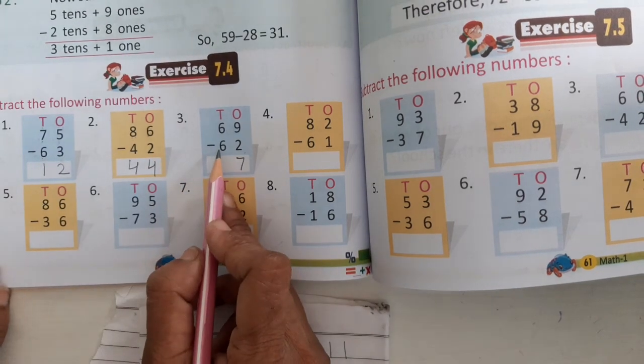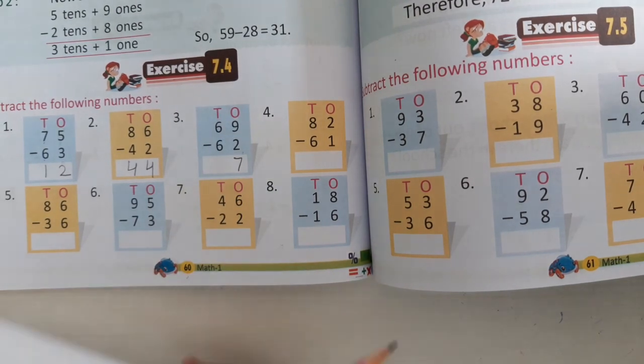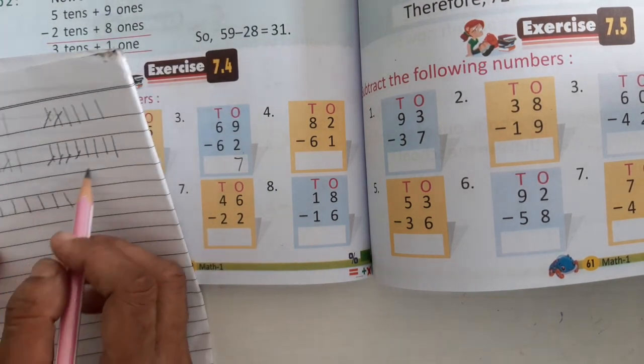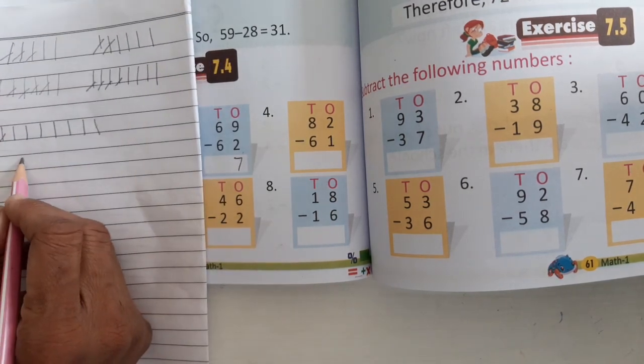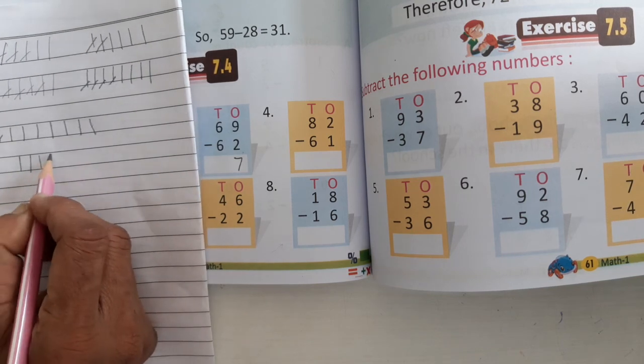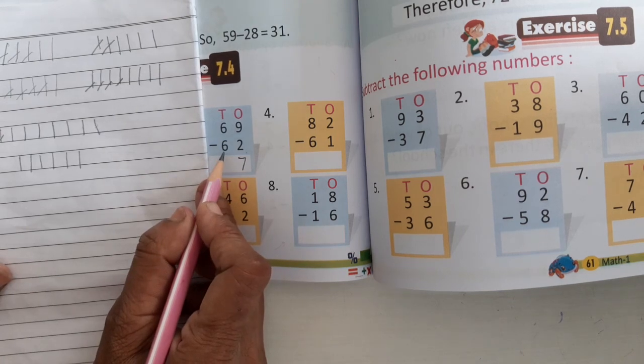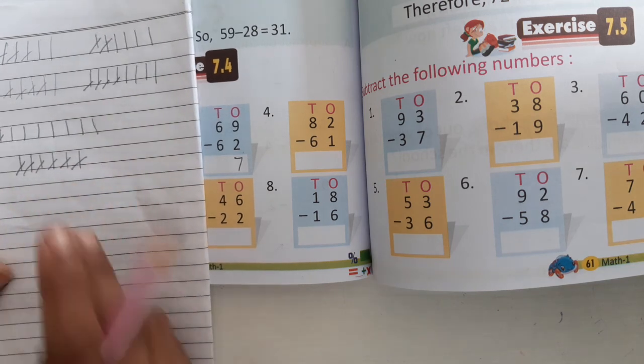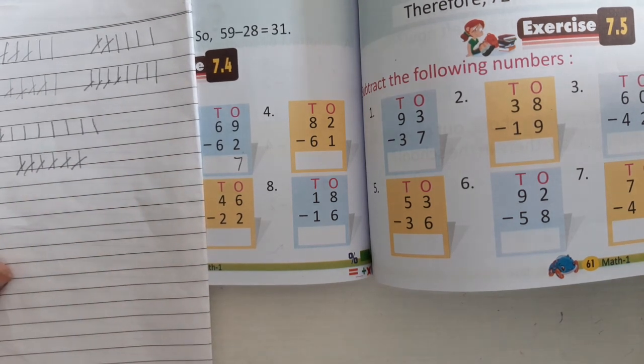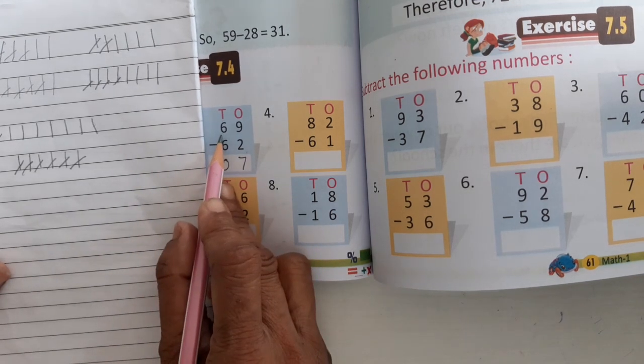And now we solve it. So, 6 minus 6. So, 6 lines draw. Now we cut, 1, 2, 3, 4, 5, 6. Now 6 is also 6. So, cut. You know the numbers 0 is left. So all the numbers are left.